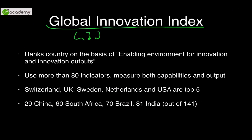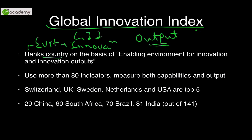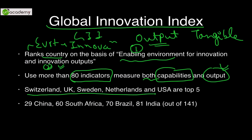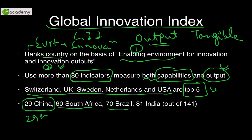The Global Innovation Index (GII) ranks countries based on two things: first, the environment a country provides for innovation; and second, the tangible outputs of those innovations. Countries are ranked on both these parameters — the enabling environment and the innovation outputs. It uses more than 80 indicators. Switzerland, the UK, Sweden, the Netherlands, and the USA are the top five. Among BRICS nations, China ranks 29th and is very high, while India is on the lower side out of 141 countries — with Brazil, China, and South Africa performing better than India.